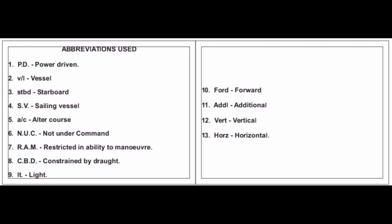Starting with the ROR cards, let me tell you the short forms used on the cards. PD stands for power driven vessel, VL is vessel, STBD is starboard, SV is sailing vessel, AC is alter course, NUC is not under command, RAM is restricted in ability to maneuver, CBD is constrained by draft, LT is light, FORD is forward, ADL is additional, VRT is vertical, and HORZ is horizontal.